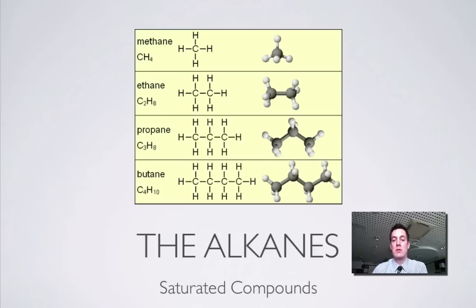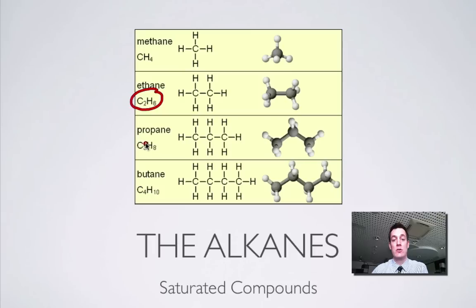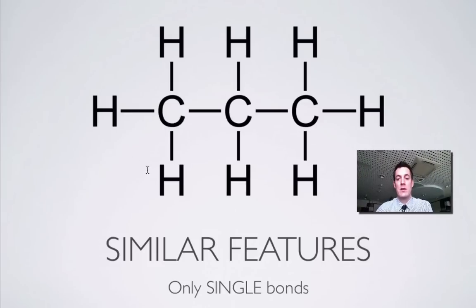The first homologous series we're going to look at is perhaps the simplest of all — the alkanes. These are what are termed saturated compounds. You can see here that one member of this group differs from the next one by CH₂: CH₄, add CH₂ and you get C₂H₆, add CH₂ again and you get C₃H₈. Here is a picture of an alkane — it's actually called propane — and the feature that all alkanes have in common is the fact that they only have single bonds in them.